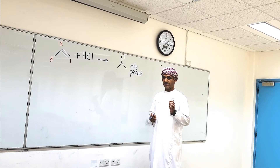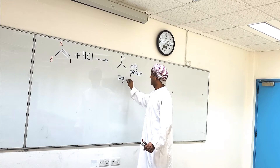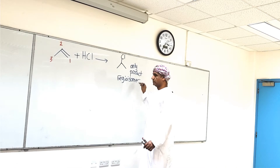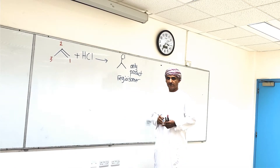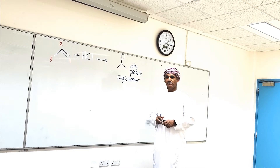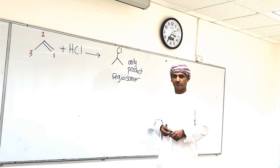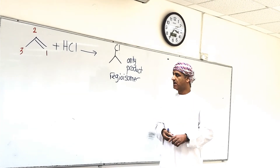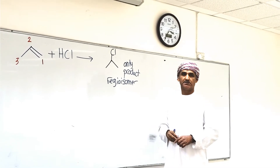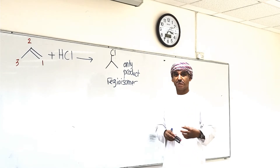There is a very important reason for this — the stability of the intermediates involved. We will take a mechanism for this reaction to see the rationale as to why hydrogen bonds to carbon one and Cl bonds to carbon two. This is an observation made by a great Russian scientist, Markovnikov, and this observation is termed Markovnikov's rule.